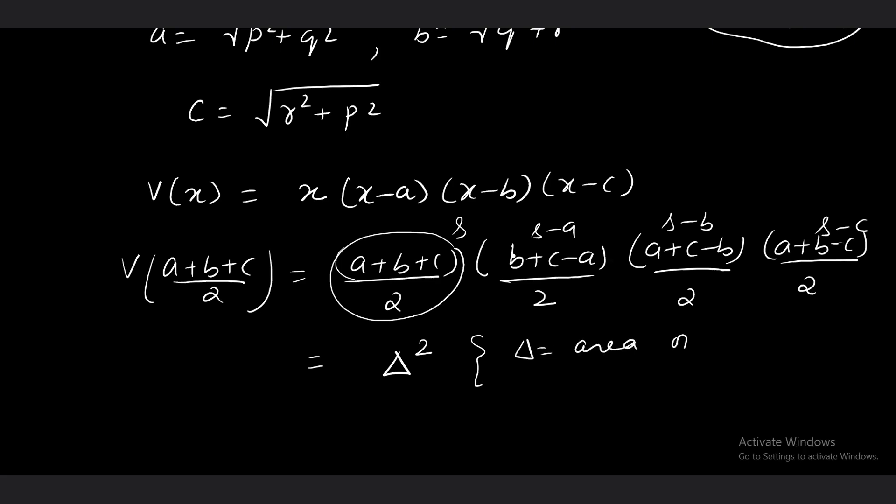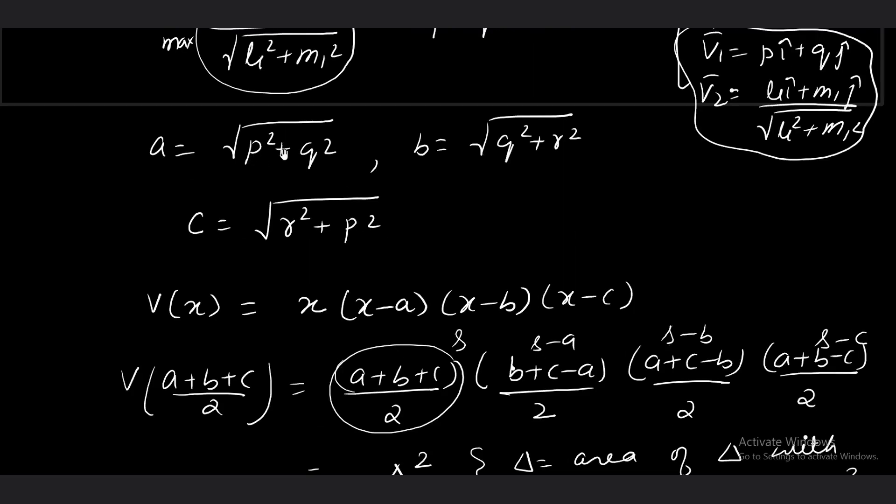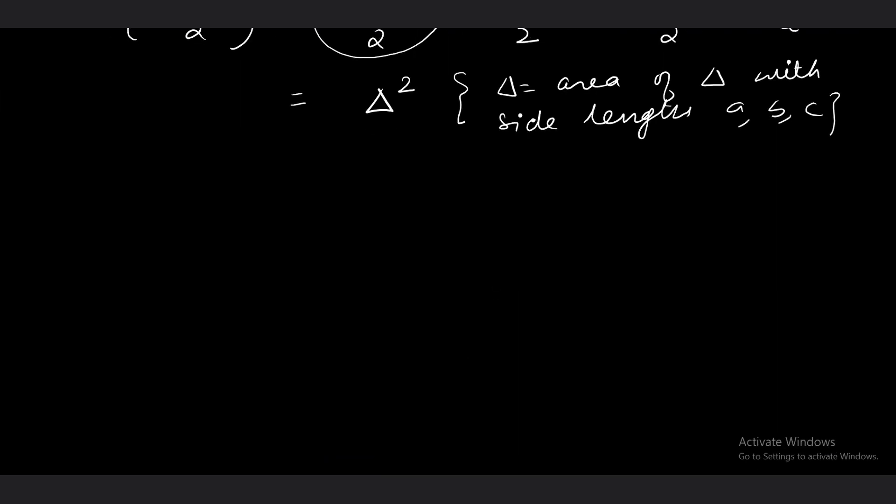But what is the use of 3D here? Now you will see how we are connecting the question to 3D. We have to consider triangle having side length a, b, c. Look at side a: it is √(p²+q²). b is √(q²+r²). While c is √(r²+p²). So I am going to consider triangle in 3D.